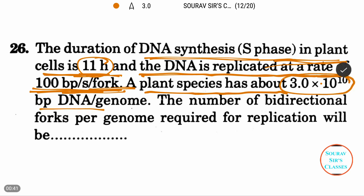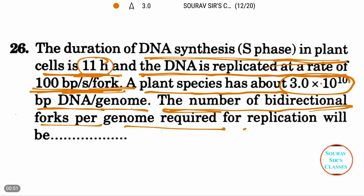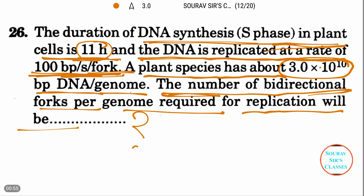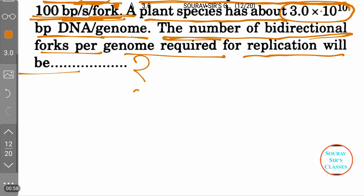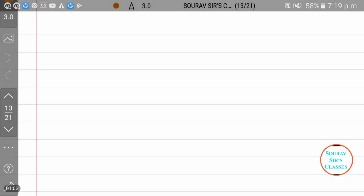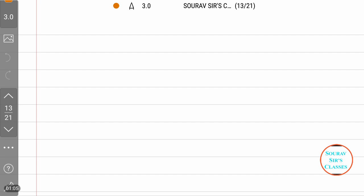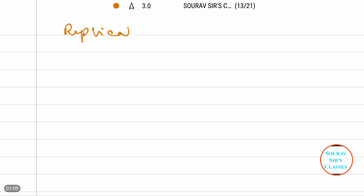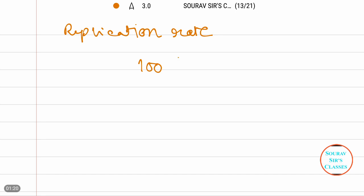A plant species has about 3.0 × 10¹⁰ base pairs of DNA per genome. The question asks: what is the number of bidirectional forks per genome required for replication? Now let me solve this — I'm inserting a page. The replication rate is 100 base pairs per second per fork.